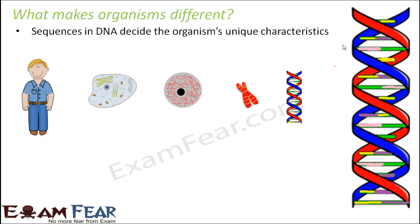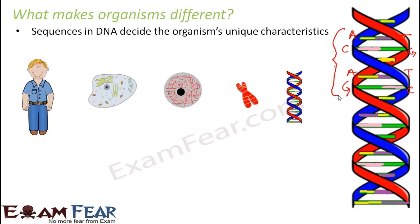If you look at the structure of DNA more closely, this is how it pairs up. The yellow lines represent A and the purple ones represent T, so A will always pair with T, and C will always pair with G. For different organisms the sequences vary, and that is why they have different characteristics. When the sequence changes, the protein which gets synthesized also changes, and when the protein changes, the characteristic of the organism changes — that is how organisms turn out to be different.